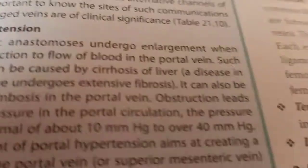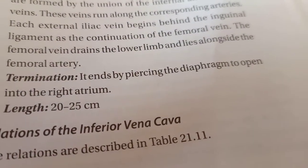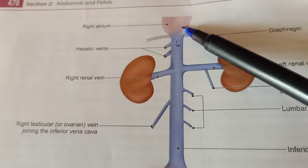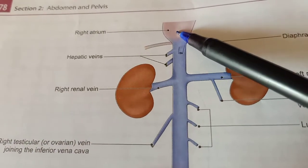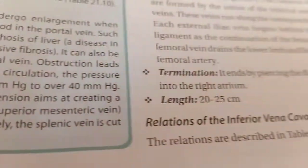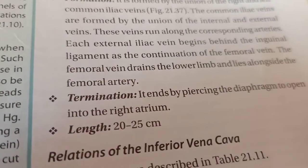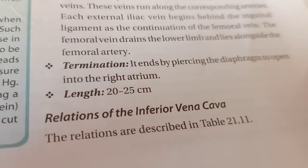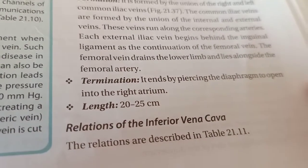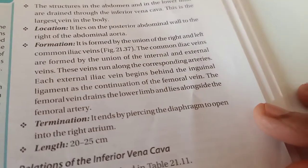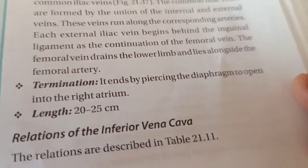The next thing is where the IVC terminates. It pierces the diaphragm to open into the right atrium. We all know the IVC ends in the right atrium of the heart, the right chamber of the heart. The length of the IVC is 20 to 25 cm. Please remember: what is IVC, its location, how it is formed, where it ends, and what is its length.